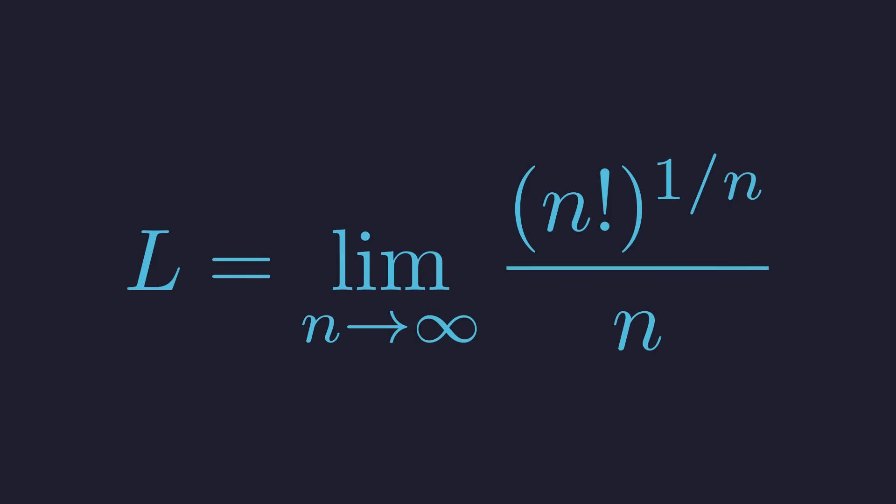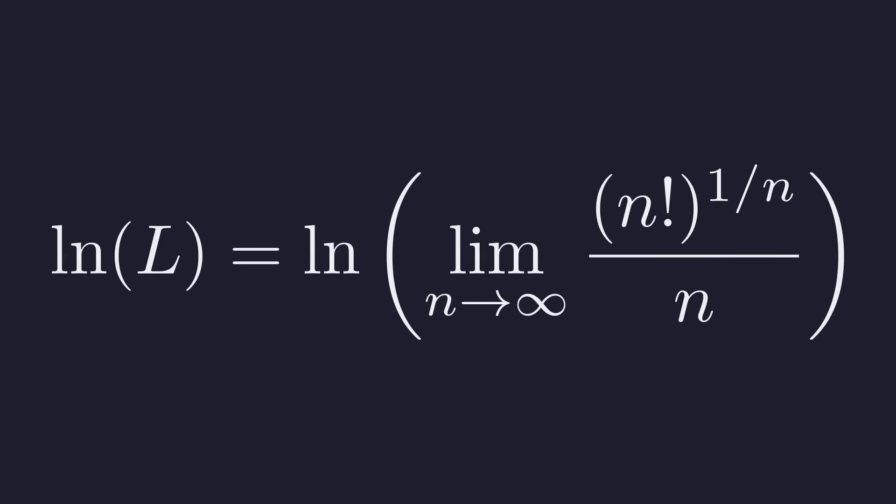First, let's rewrite the nth root as a fractional exponent, 1 over n. Now, let's take the natural logarithm of both sides. This will allow us to simplify things. We get the natural log of L equals the natural log of the entire limit. Since the natural logarithm is continuous, we can swap the order and bring the limit outside. This gives us the limit of the natural log of the expression, which is much easier to work with.